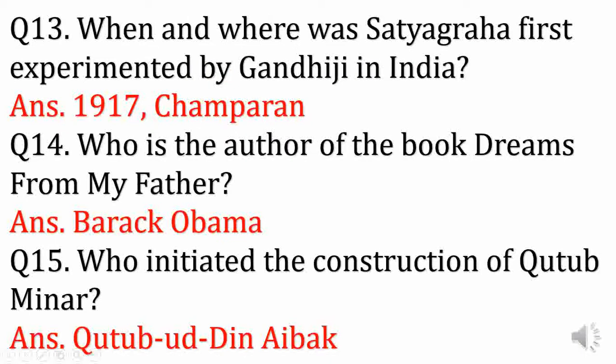When and where was Satyagraha first experimented by Gandhiji in India? Answer: In the year 1917 at Champaran.